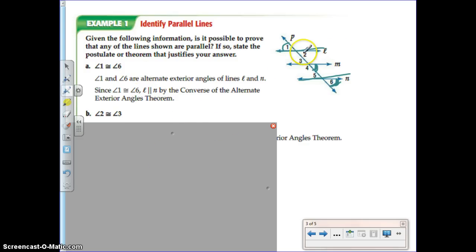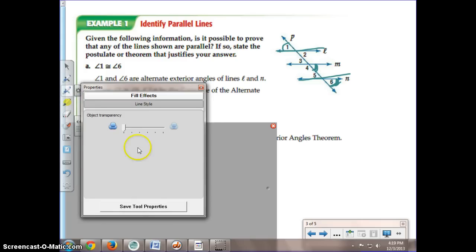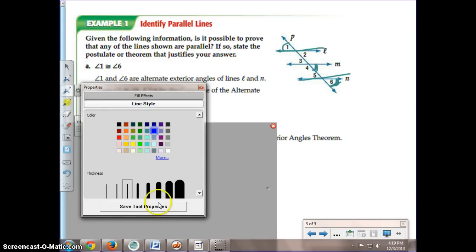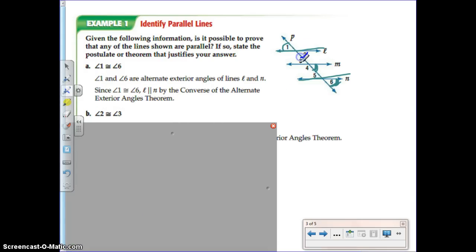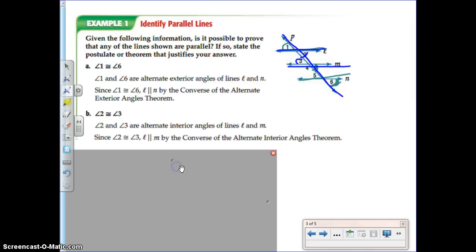Angle 2 and angle 3 are now congruent, so we have some new information. And these, of course, when we look at L and M and the transversal P are alternate interior angles. So this is going to give us the information that L is parallel to M because of the converse of the alternate interior angles theorem.